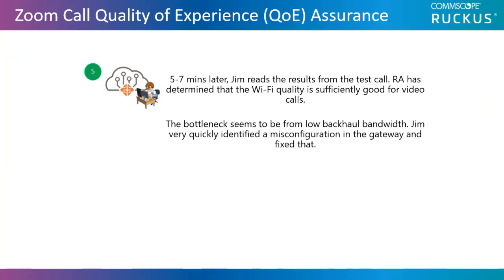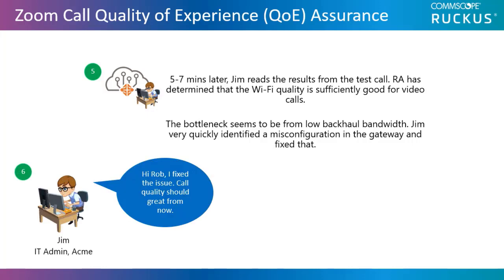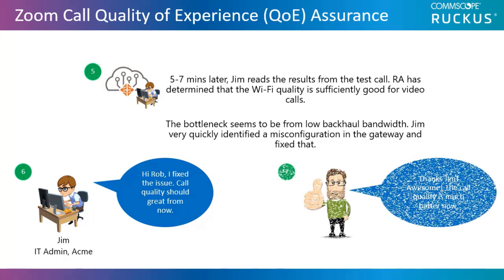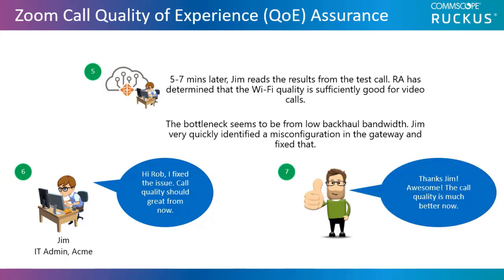Five to seven minutes later, Jim reads the results from the test call. He can look at such things as throughput, RSSI, signal-to-noise ratio, frame rate, latency, jitter, and so forth. In this example, Ruckus Analytics has determined that the Wi-Fi quality is sufficiently good for video calls, and that the bottleneck seems to be from low backhaul bandwidth. So Jim very quickly identified a misconfiguration in the gateway and fixed that.